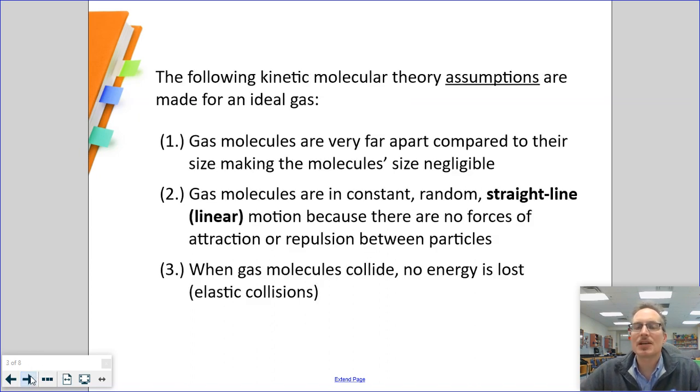To be considered an ideal gas, assumption number one: we have to assume that molecules are very far apart of different gas particles based on how big the size is of a gas particle. Think about this - molecules are really, really small. If I have one molecule of hydrogen gas or methane gas, I can't see that with the naked eye.